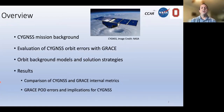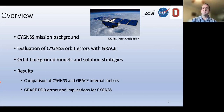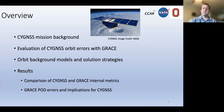To give you an overview of my presentation today, I'm first going to provide some background on the Cygnus mission — what its primary mission is and what we are using it for. Following that, an evaluation of methods for assessing Cygnus orbit errors using GRACE as an analog, then some orbit background models we're applying and our solution strategies. Finally, we'll show the main results: a comparison of Cygnus and GRACE internal metrics, followed by an evaluation of GRACE POD errors and implications for Cygnus.